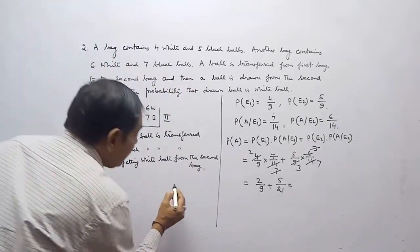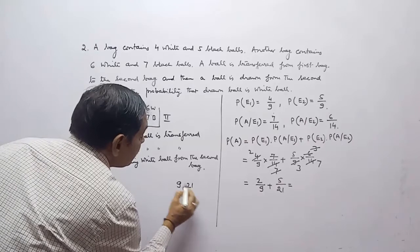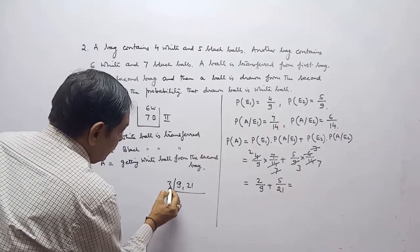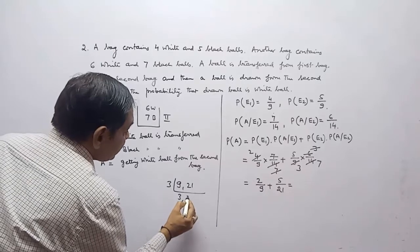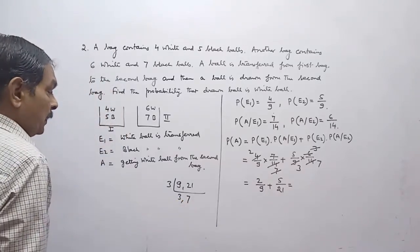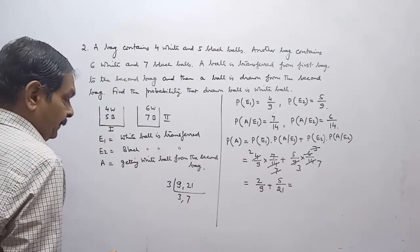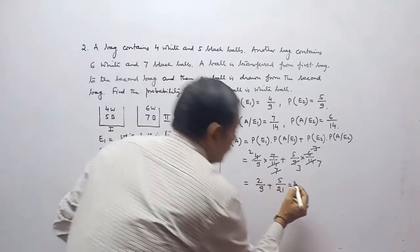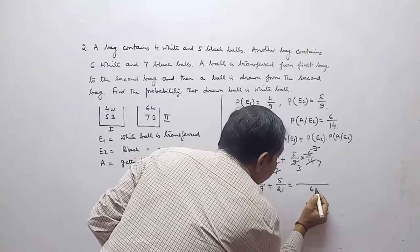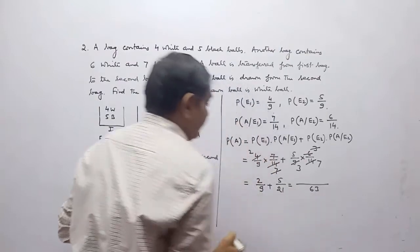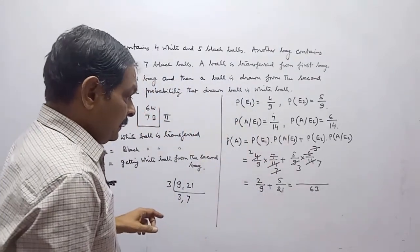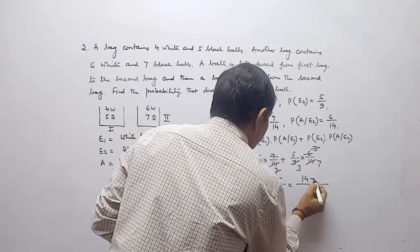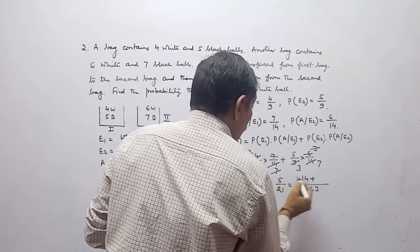The LCM of nine and 21: we have three, three, and seven, so the LCM is 63. This gives seven into two, which is 14, plus three into five, which is 15.